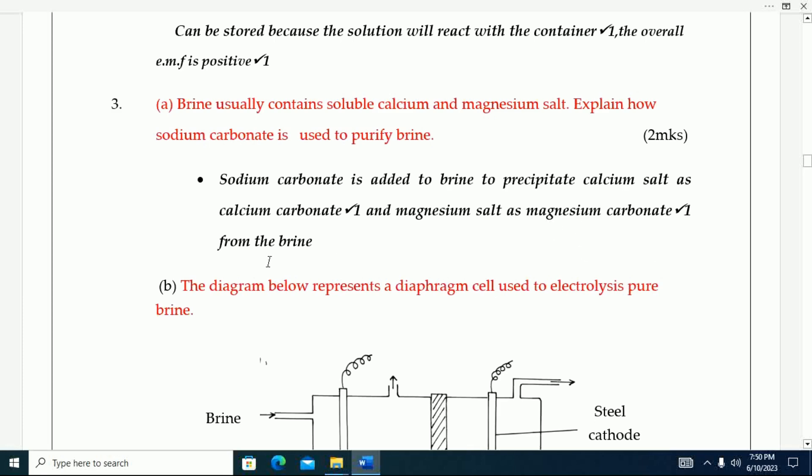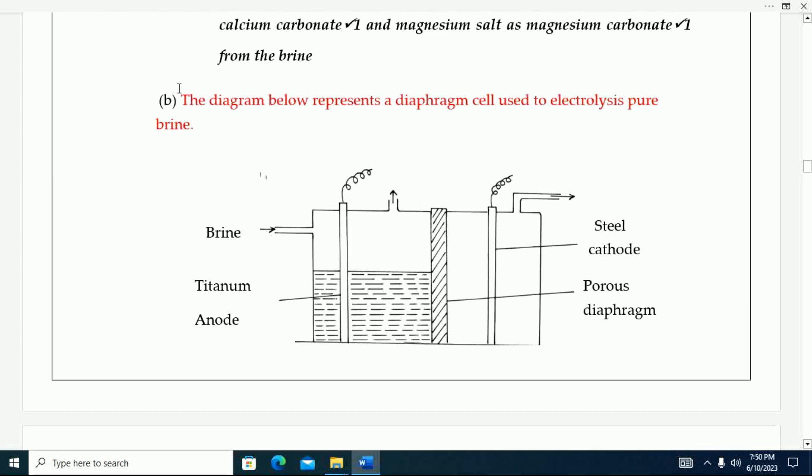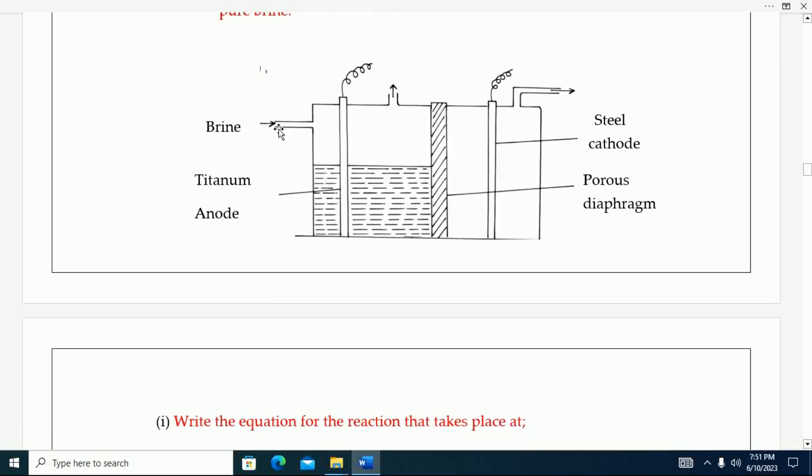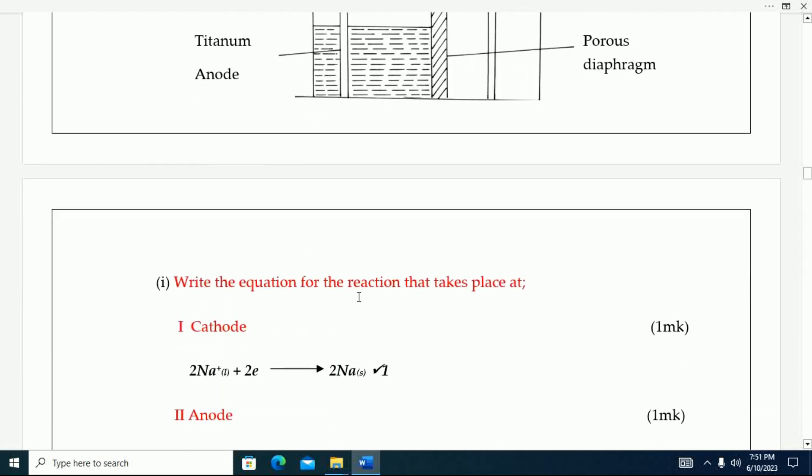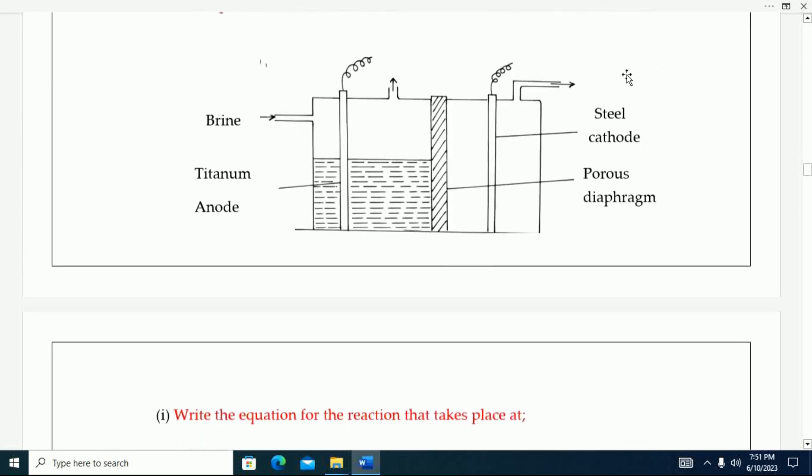Next, you are given a diagram here. The diagram below represents a diagram cell used to electrolysis of pure brine. You can see brine, you can see how it is set up.